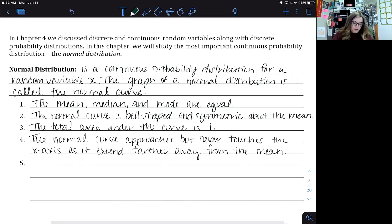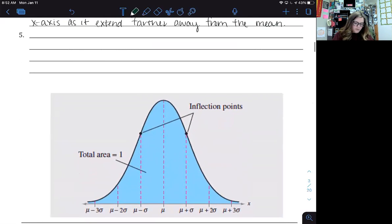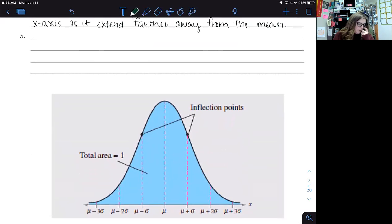And then our fifth property deals more with our graph of the normal distribution. Key things is that between mu minus sigma and mu plus sigma, the graph curves downward.